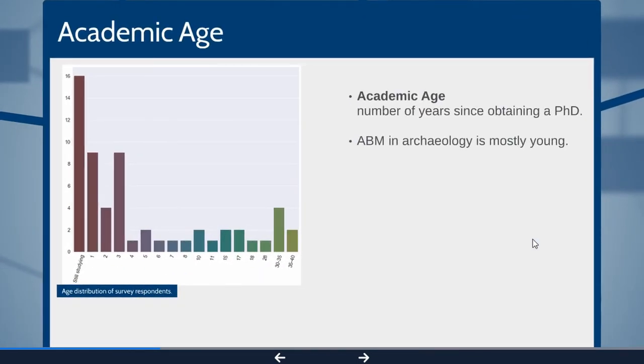Their academic age—the number of years since they obtained a PhD or master—shows they're mostly young. They're either still PhD students or they just graduated. There's a bit of a blip around people who are much older, which probably indicates the wave of modeling that happened in the 70s. Those people happily are not retiring from archaeology, but in general this is a new phenomenon.